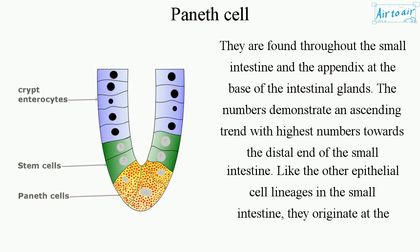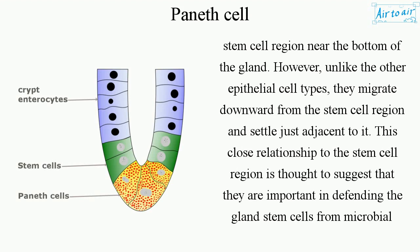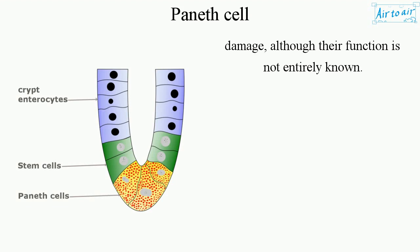Like the other epithelial cell lineages in the small intestine, they originate at the stem cell region near the bottom of the gland. However, unlike the other epithelial cell types, they migrate downward from the stem cell region and settle just adjacent to it. This close relationship to the stem cell region is thought to suggest that they are important in defending the gland stem cells from microbial damage, although their function is not entirely known.